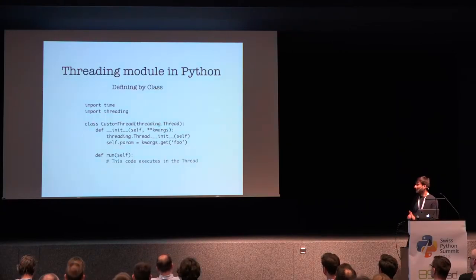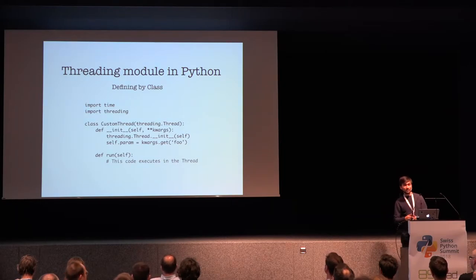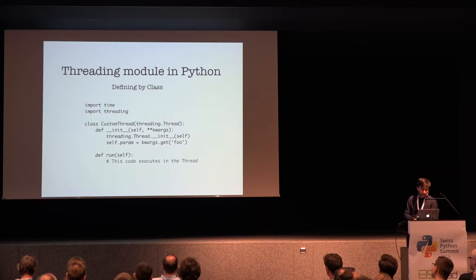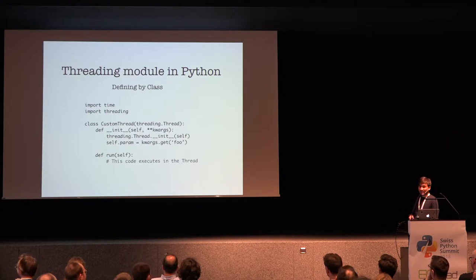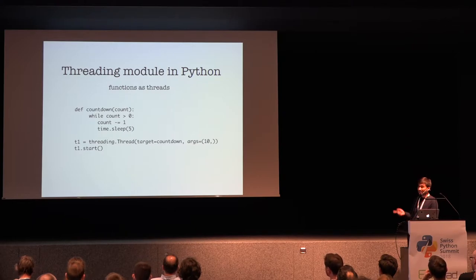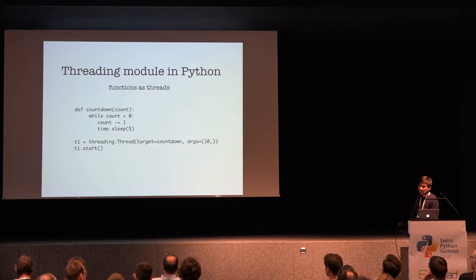Let's talk a bit about the API — how the API looks in Python and how you proceed with multi-threading. Python has got this threading module which has a Thread class. If you're going to define a class-based thread, the run function is where you write your execution code. There's another way using functions as threads — write a function and pass it as a target to threading.Thread, with args as the arguments. Then d1.start() will start that thread.